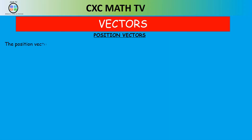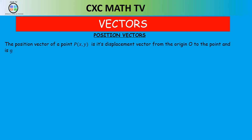The position vector of a point: any point (x, y) is its displacement vector from the origin. It is written as vector OP equal to (x, y) in column vector form. So we're going from the origin O to the point P, and that vector is (x, y).